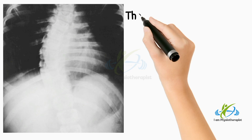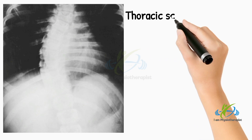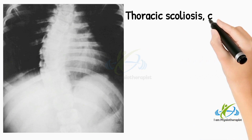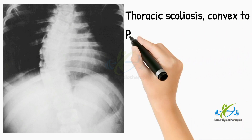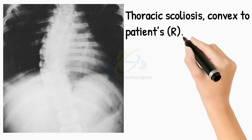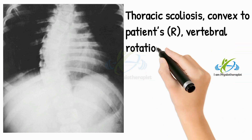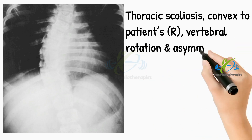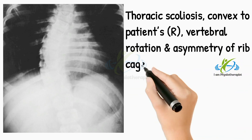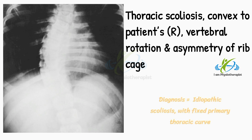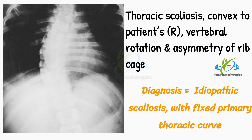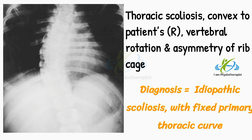This radiograph shows a thoracic scoliosis convex to the patient's right. There is vertebral rotation and asymmetry of the ribcage. Diagnosis is idiopathic scoliosis with fixed primary thoracic curve.